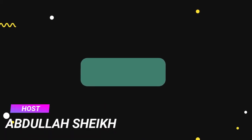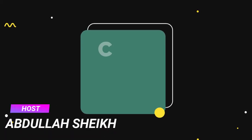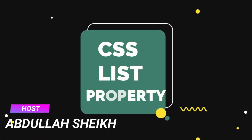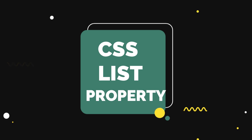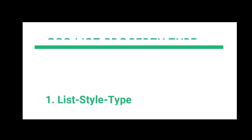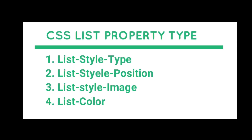Hello everyone, this is Abdullah from Code Prime. In this tutorial we're going to cover the CSS list-style property and explain how it can be used. We have around four sub-properties to explain: list-style-type, list-style-position, list-style-image, and list-style (the shorthand). Let's start the video right now.